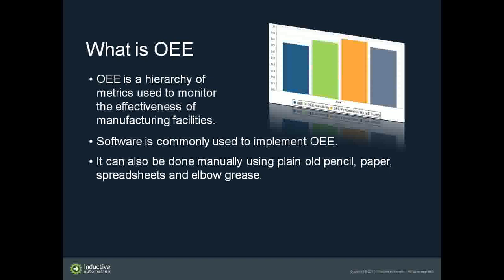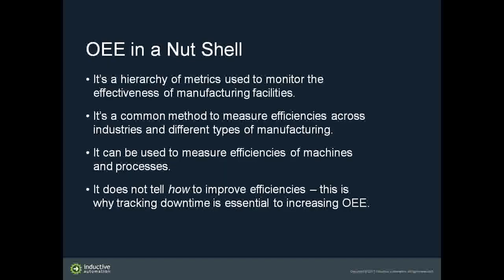Good morning, everyone. We're going to start by briefly talking about what OEE — overall equipment effectiveness — is. It's a hierarchy of metrics used to measure efficiency. It can be done manually with pencil and paper, but it's also commonly done using software. The formulas aren't too difficult, but what is more difficult is everything around them: collecting accurate information, integrating into your plant floor, communication networks, and how people interface with it.